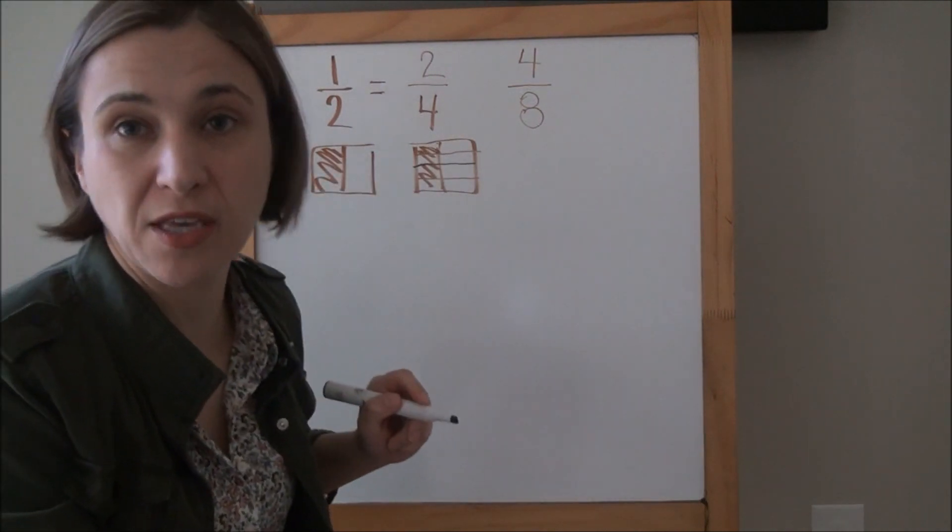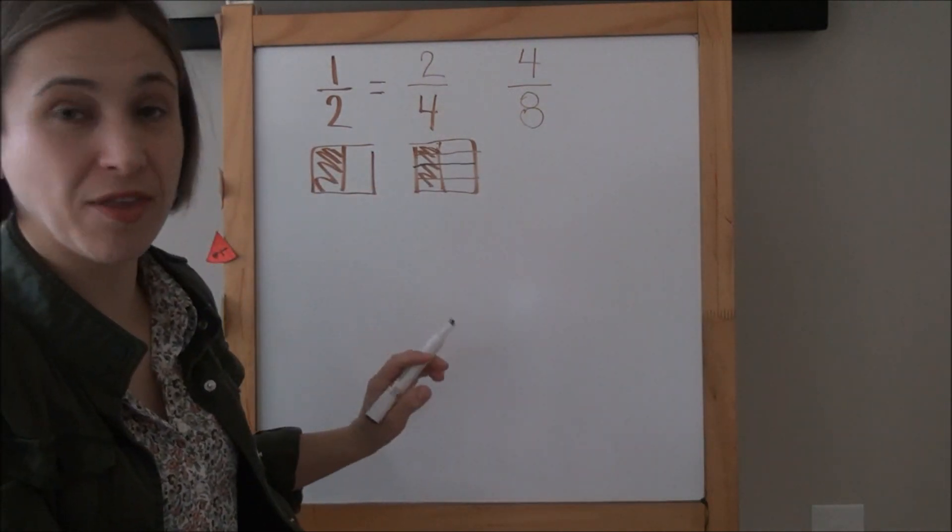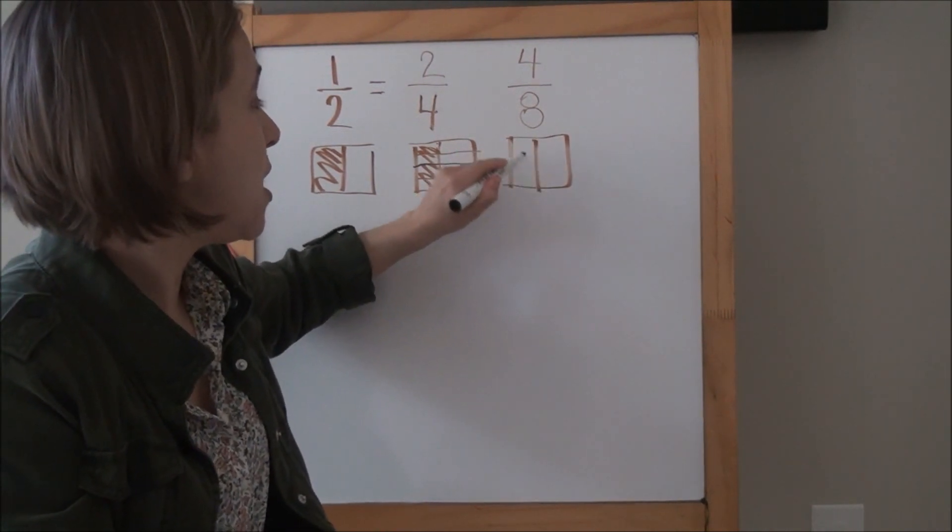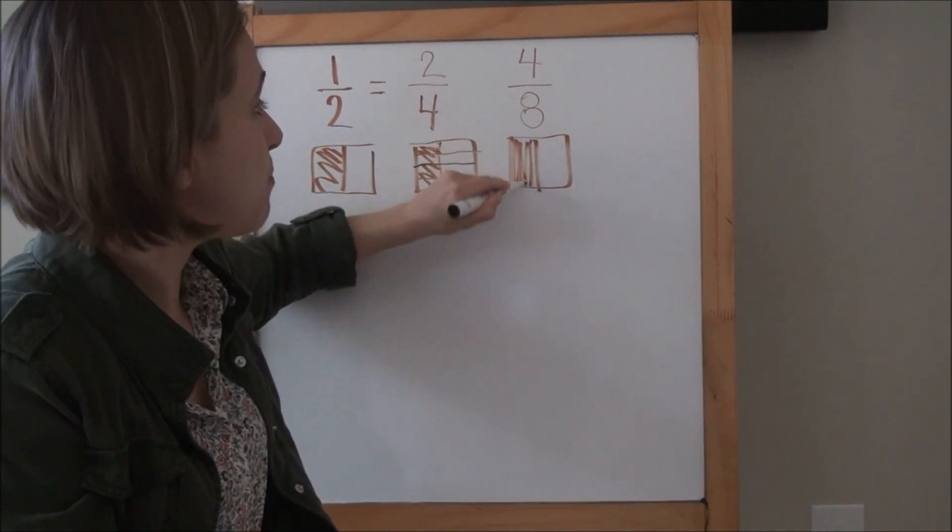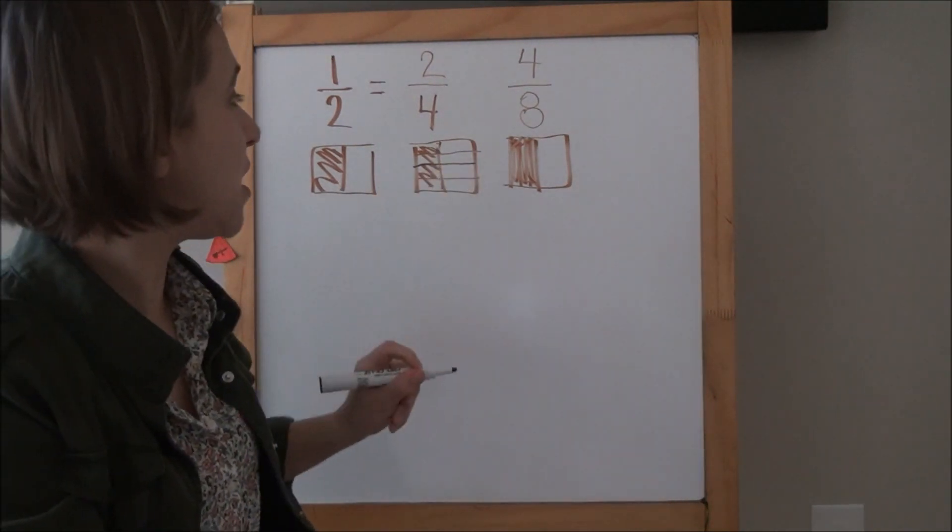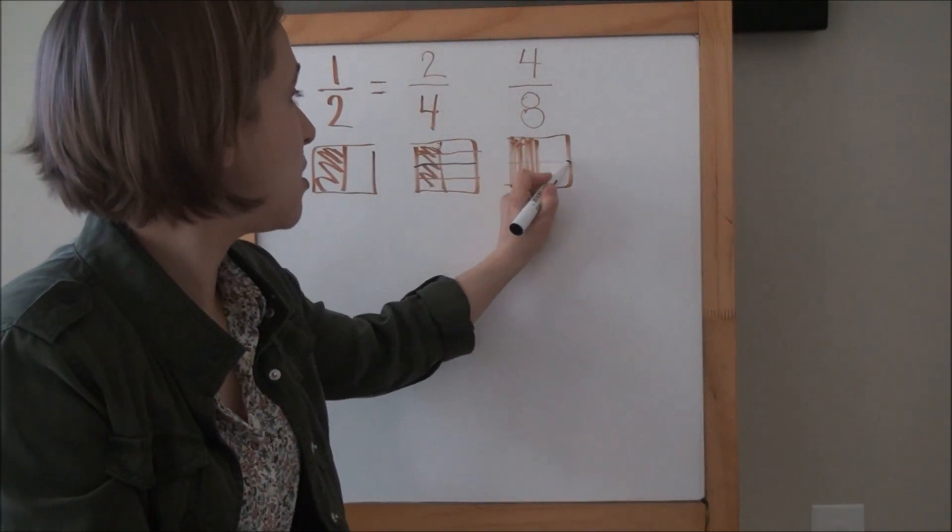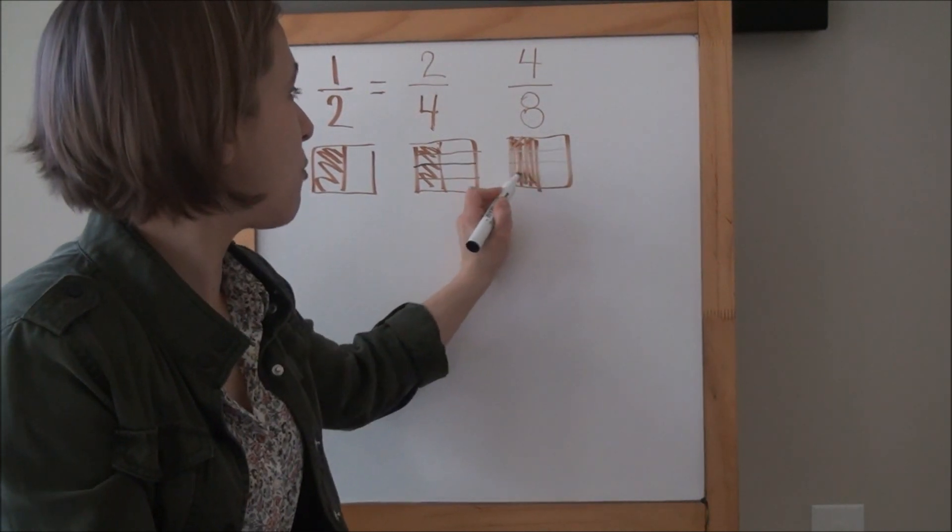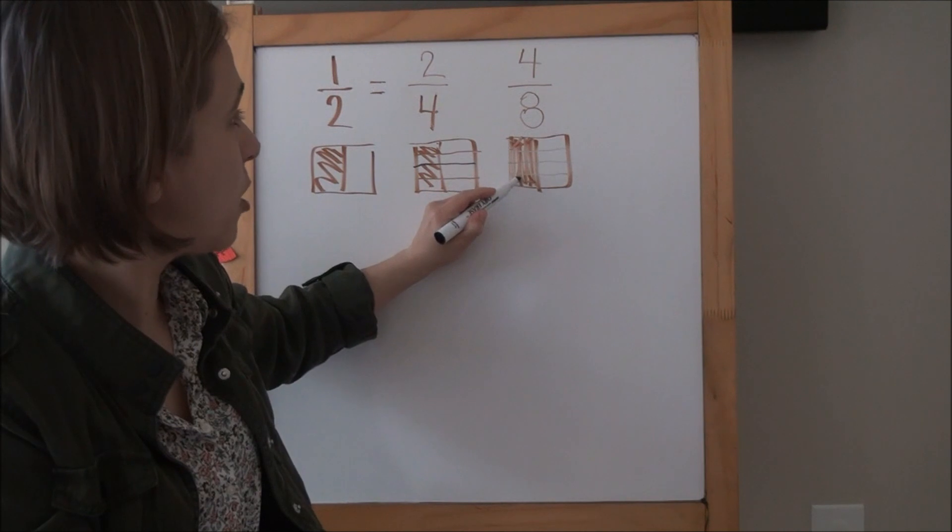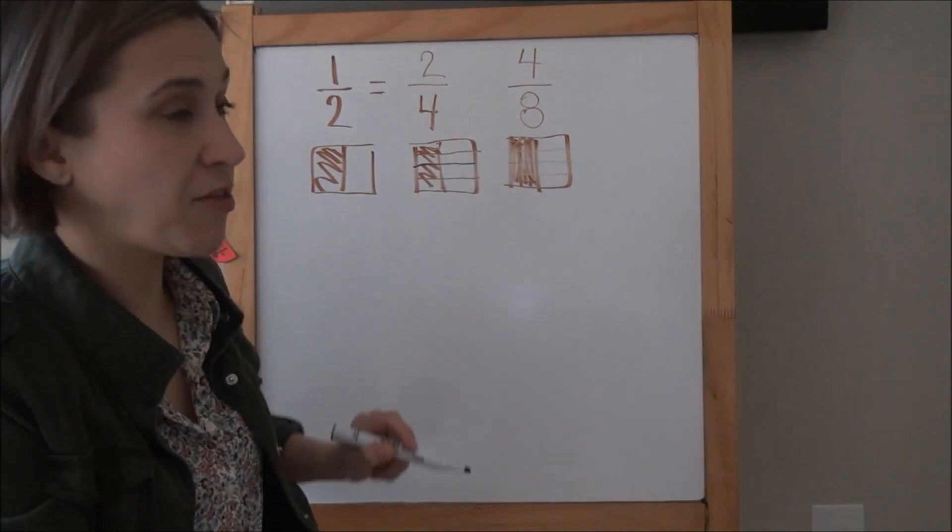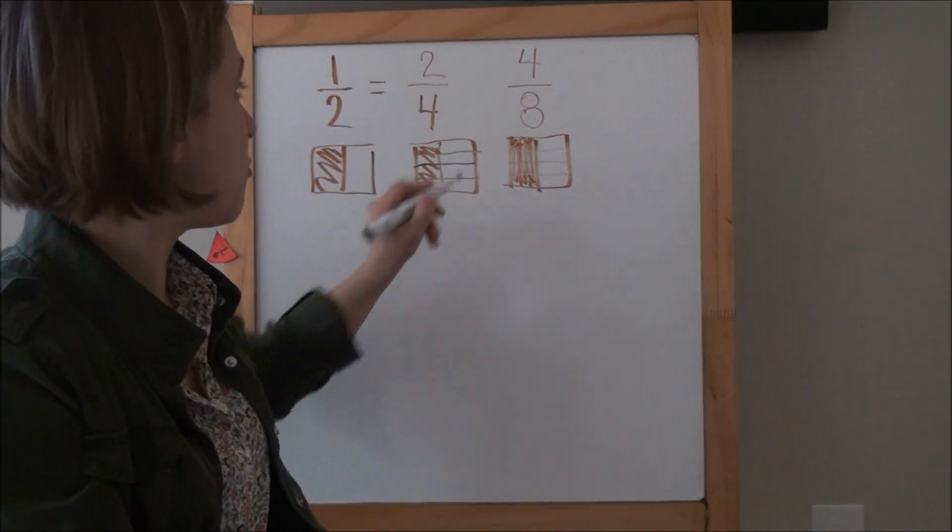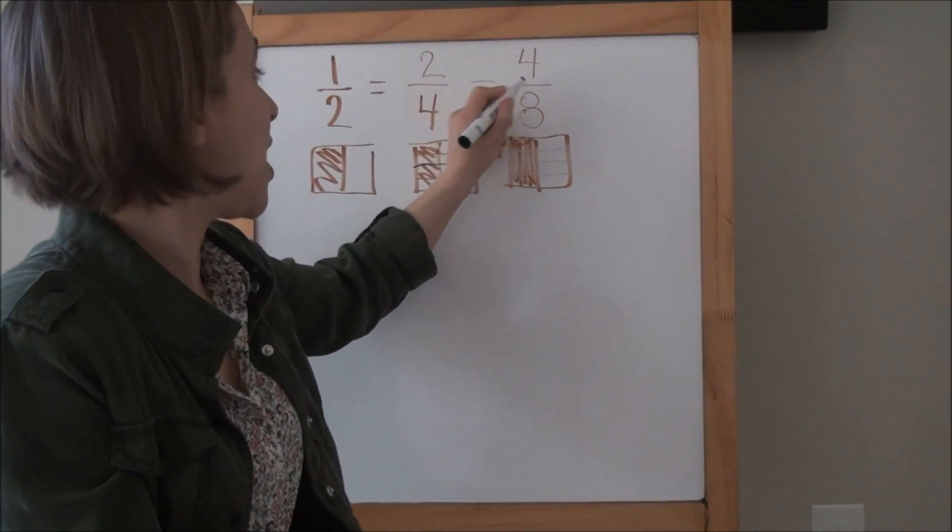We didn't color anything extra. We didn't take anything away. It's still the same amount that's colored. It's just that the name is different because the number of folds are different, or the number of parts are different. We still have that one-half that's colored, but here are our new folds or our new parts. So now we have four-eighths shaded. So what you're telling me is one-half is equal to two-fourths, and one-half is also equal to four-eighths.